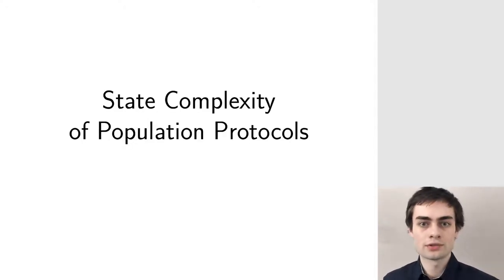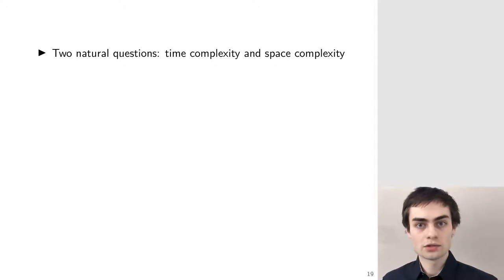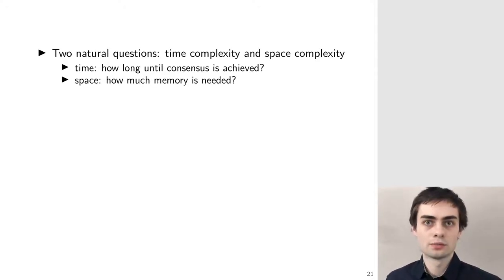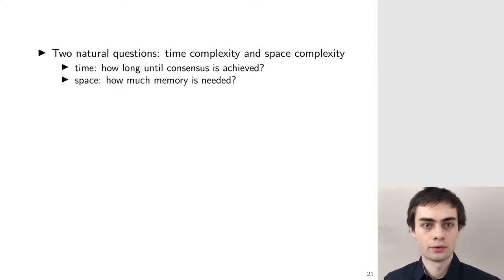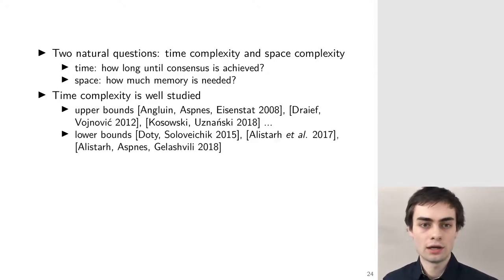This leads us to the main topic: the state complexity of population protocols. There are two natural questions — time complexity and space complexity. Time complexity is how long it takes until the protocol achieves consensus, whereas state complexity is how much memory the protocol needs, which corresponds directly to the number of states. There has been a lot of research on time complexity, with upper bounds from protocols and lower bounds showing that certain predicates cannot stabilize quickly.